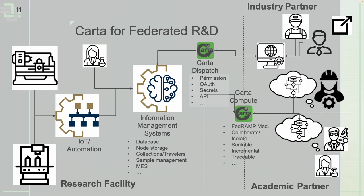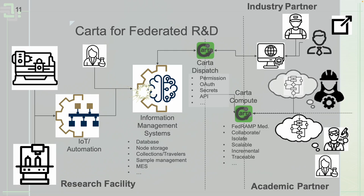This expands very nicely and easily. We've implemented this in a couple of locations where a research facility starts with information generated from a machine, moves through an IoT or automation platform like MQTT or IoT Core, before moving into an information management system — whether a database, node storage, or physical travelers collections entered into a database. These become accessible through Carta Dispatch to applications and algorithms. As scientists and engineers develop these algorithms, those are exposed through Carta Dispatch so that we can access them through a compute platform that is FedRAMP compliant, with collaboration, scalability, incremental development, and traceability all present before providing the final application.